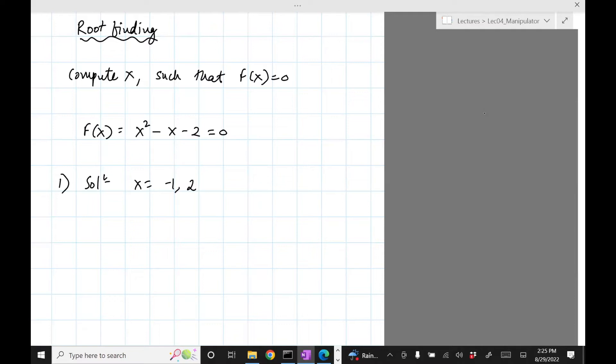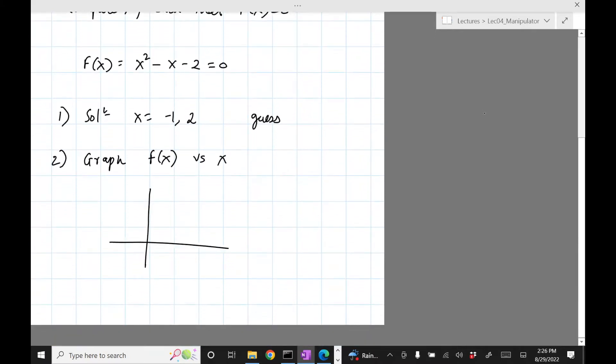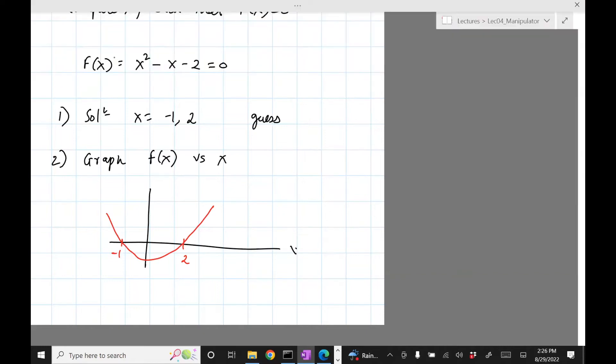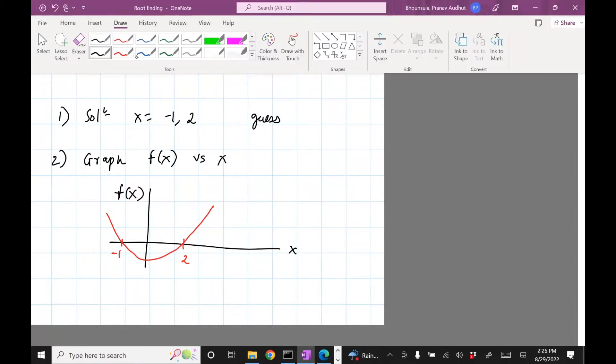Try some numbers and see if you get the answer which you want. Second is to graph this - graph f(x) versus x. If you graph it, you will see that it intersects the x-axis at minus one and two, and then you know that these are the two roots.